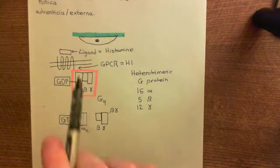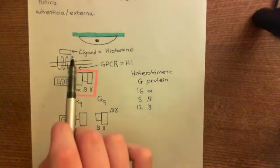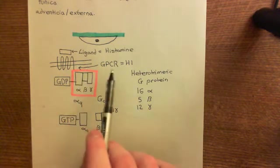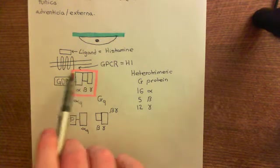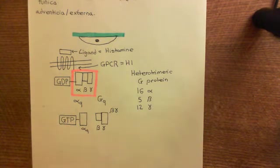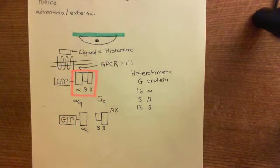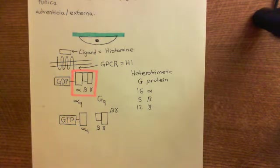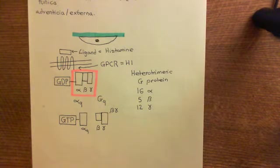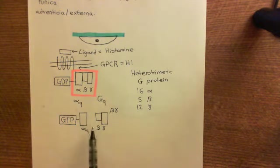When histamine binds to the H1 receptor — and in fact there are many other inflammatory ligands which will have their own GPCR receptors coupled to the GQ heterotrimeric G protein — we're taking histamine as our archetypal example. Histamine binds to the H1 receptor, which becomes catalytically active and acts on the GQ heterotrimeric G protein, chopping off the guanosine diphosphate from the alpha subunit and replacing it with guanosine triphosphate from the cytoplasm. This gives you alpha-Q GTP and the beta-gamma subunit.